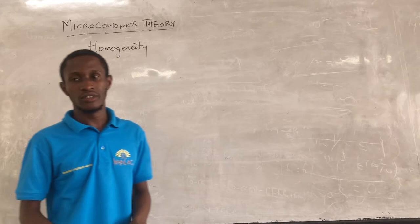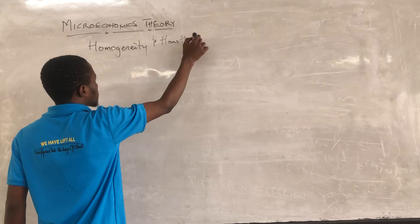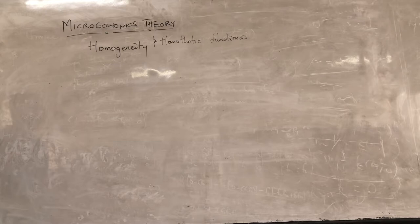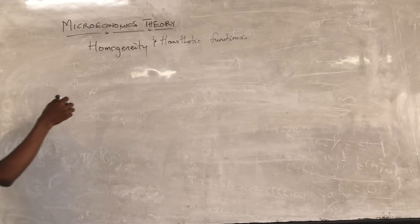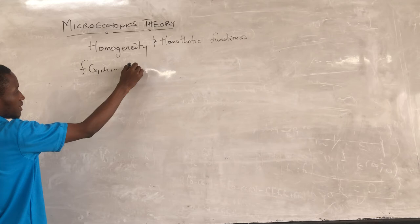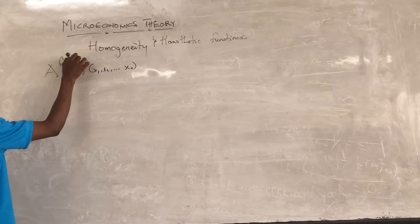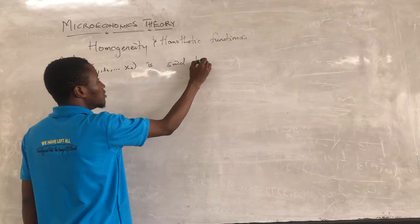We are going to look at homogeneity and also homogenic functions. For homogeneity, a function f of x1, x2, ..., xn is said to be homogeneous.